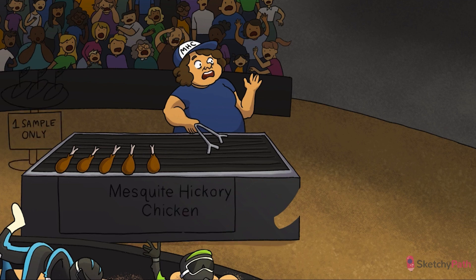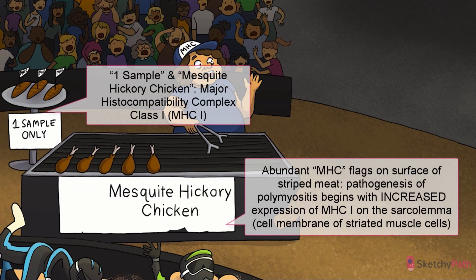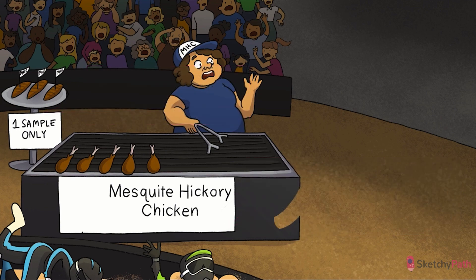The hypothesized pathogenesis of polymyositis begins with the muscle cell. The first step of the mechanism may involve increased expression of major histocompatibility complex class 1 antigens on the membrane of myocytes, also called the sarcolemma. For MHC, think mesquite hickory chicken. The receptors collecting on the sarcolemma are like the little MHC flags dotting the surface of the meat samples. Remember, this is MHC-1, so one sample per person.